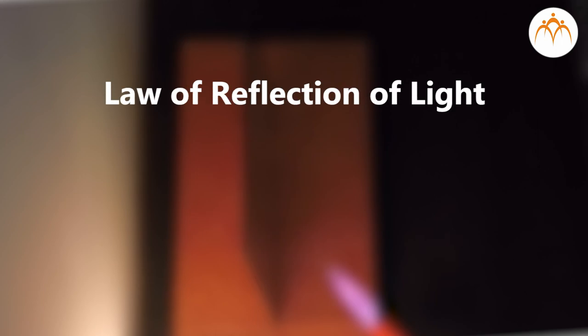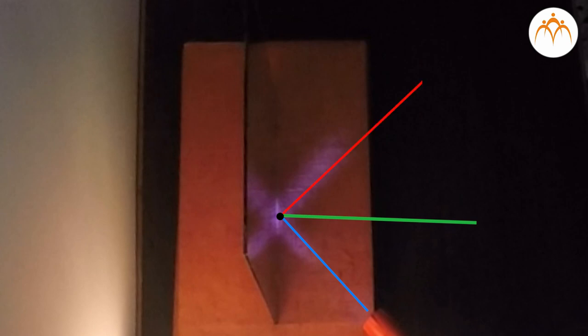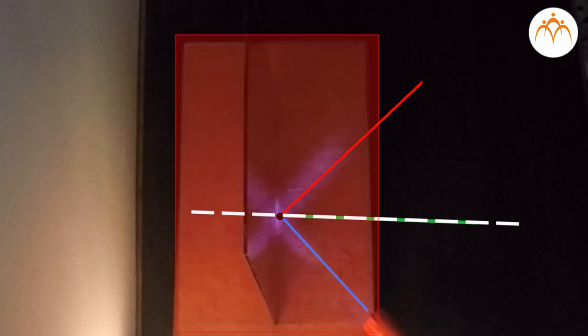The law of reflection states that when a ray of light reflects from a surface, the angle of incidence is equal to the angle of reflection. We can see that the reflected ray and the incident ray are on the opposite sides of the normal and are in the same horizontal plane.